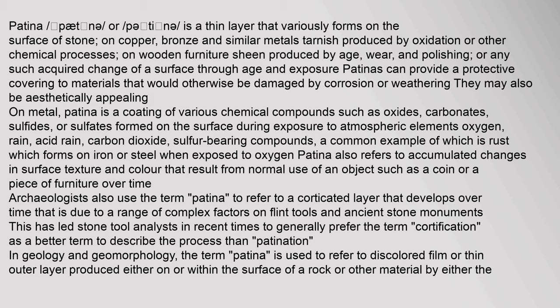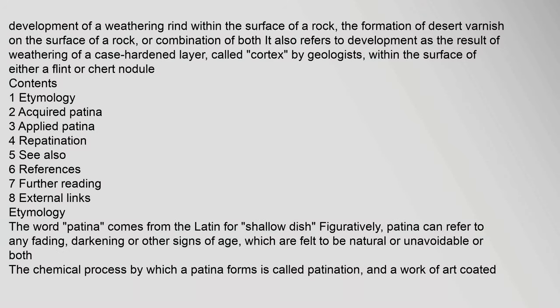In geology and geomorphology, the term patina is used to refer to a discolored film or thin outer layer produced either on or within the surface of a rock, by the development of a weathering rind, the formation of desert varnish on the surface of a rock, or a combination of both. It also refers to the development of a case-hardened layer, called cortex by geologists, within the surface of either a flint or chert nodule.